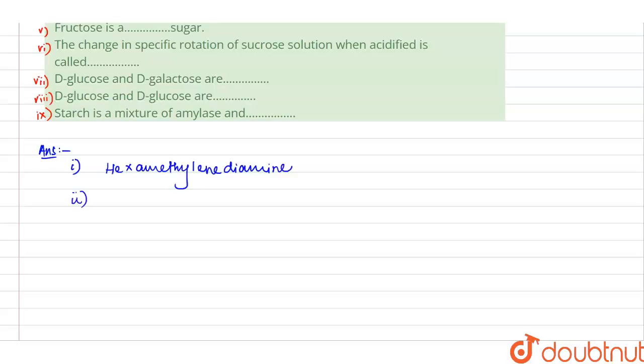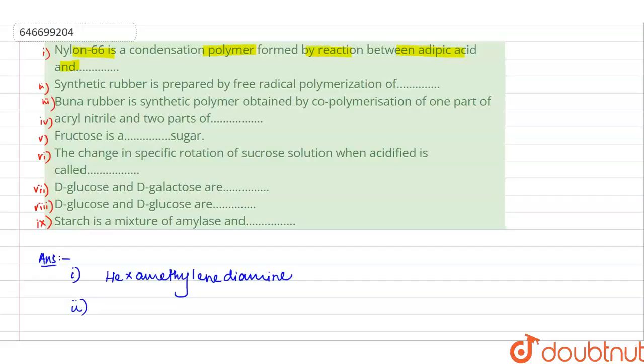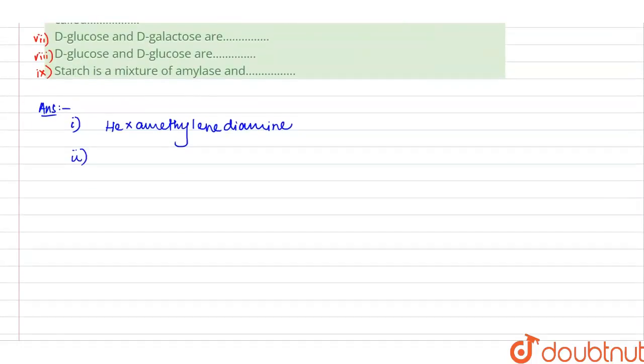Okay, now in the second question we have: synthetic rubber is prepared by free radical polymerization of what? Synthetic rubber is prepared by free radical polymerization of monomers. Example: isoprene.